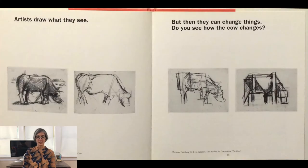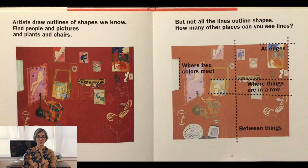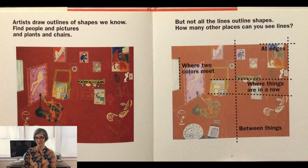Artists draw what they see, but then they can change things. Do you see how the cow changed? Artists draw outlines of shapes we know. Find people and pictures and plants and chairs. But not all the lines outline shapes. How many other places can you see lines? Can you see lines at the edge of the painting? How about lines between things?